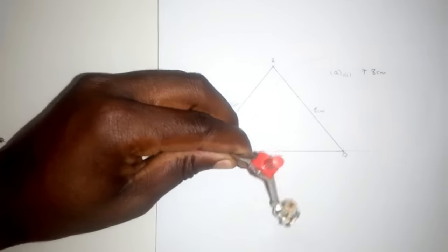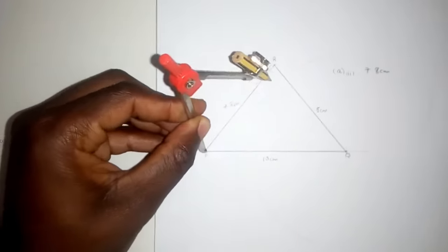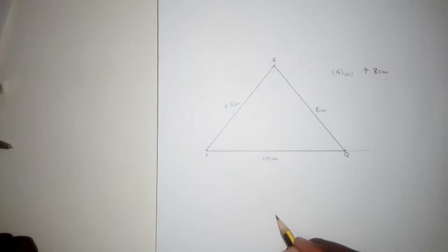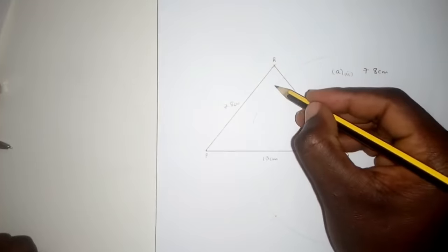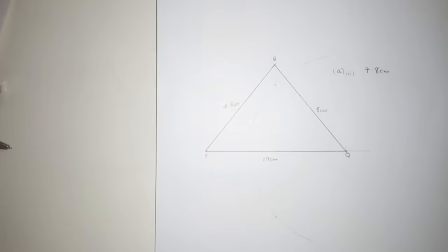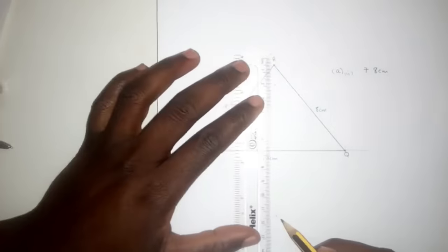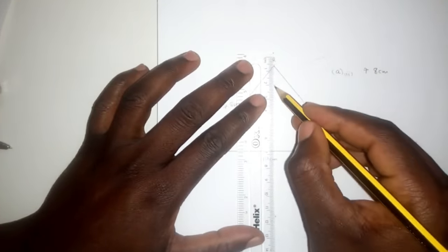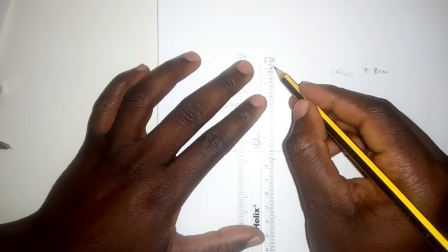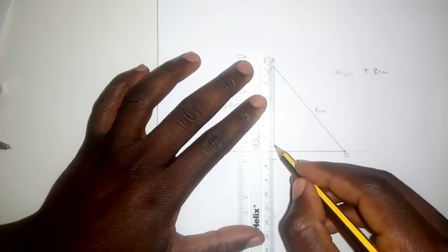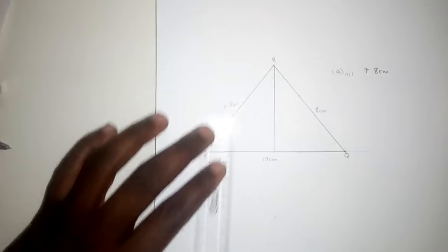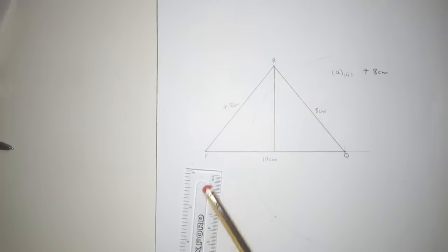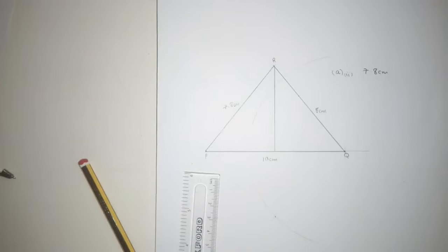Take the compass to the other point, bisect here and here to find where the arcs meet. Use the ruler passing through both intersection points to draw the line inside the triangle. That's the perpendicular bisector of PQ.